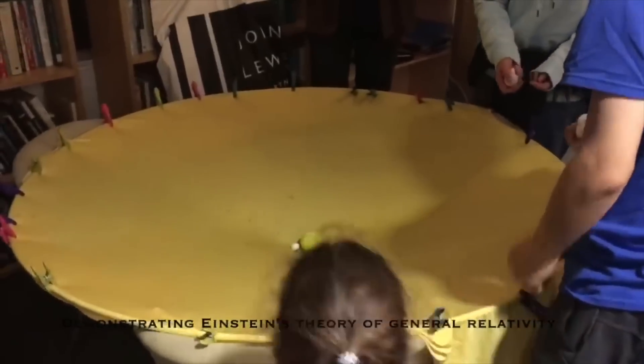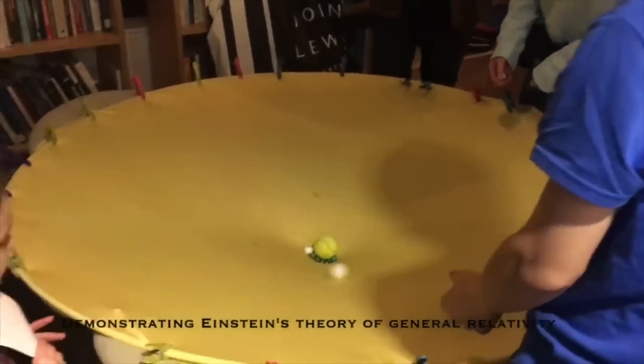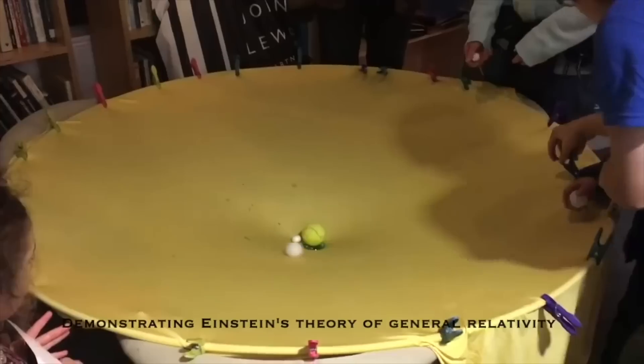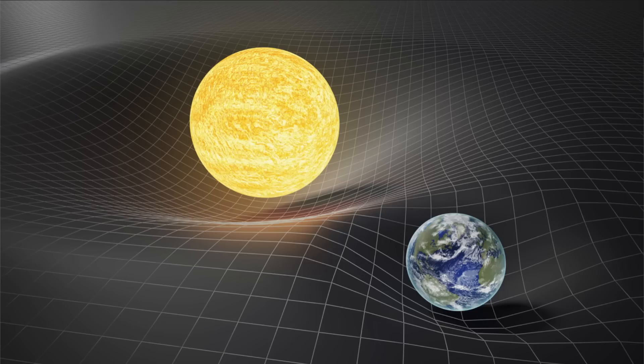In Einstein's theory of general relativity, mass curves space-time, and that's what gives us the effect of gravity. You can picture that at least in two dimensions by putting a basketball in the middle of a trampoline. Then you take a ping-pong ball and roll it in a straight line, and it will follow the curved path of the trampoline. The trampoline is space in this analogy.